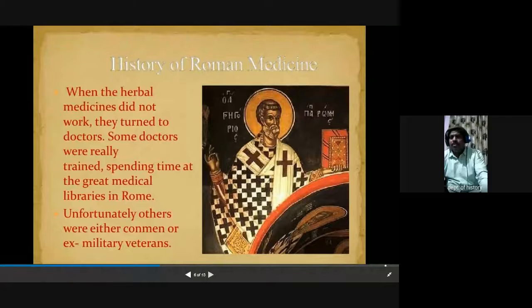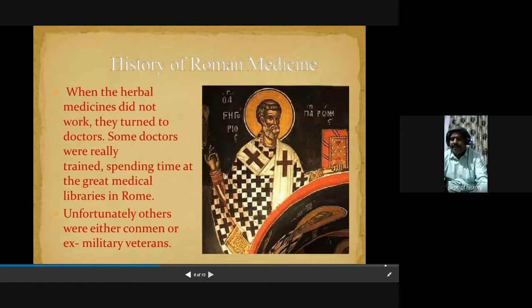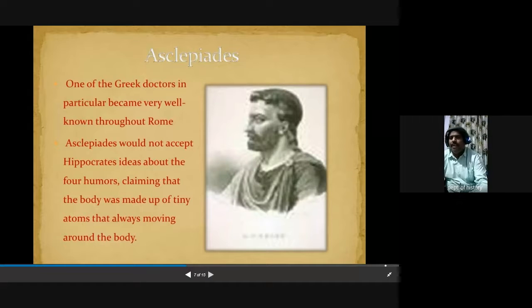In the last class we also discussed sewage and hygienic conditions, and to maintain all these they followed a planned drainage system. As part of medicine, they built hospitals where patients were treated by qualified physicians and given medicines. The greatest physician of this period was Galen, who was the greatest physician during the ancient Roman period. He wrote nearly more than 500 books on human anatomy and physiology, explaining the functions of different organs of the human body.